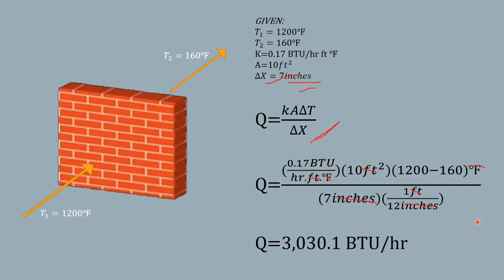So we put it in the calculator. We get the answer of 3,030.1 BTU per hour. So this will be our final answer.